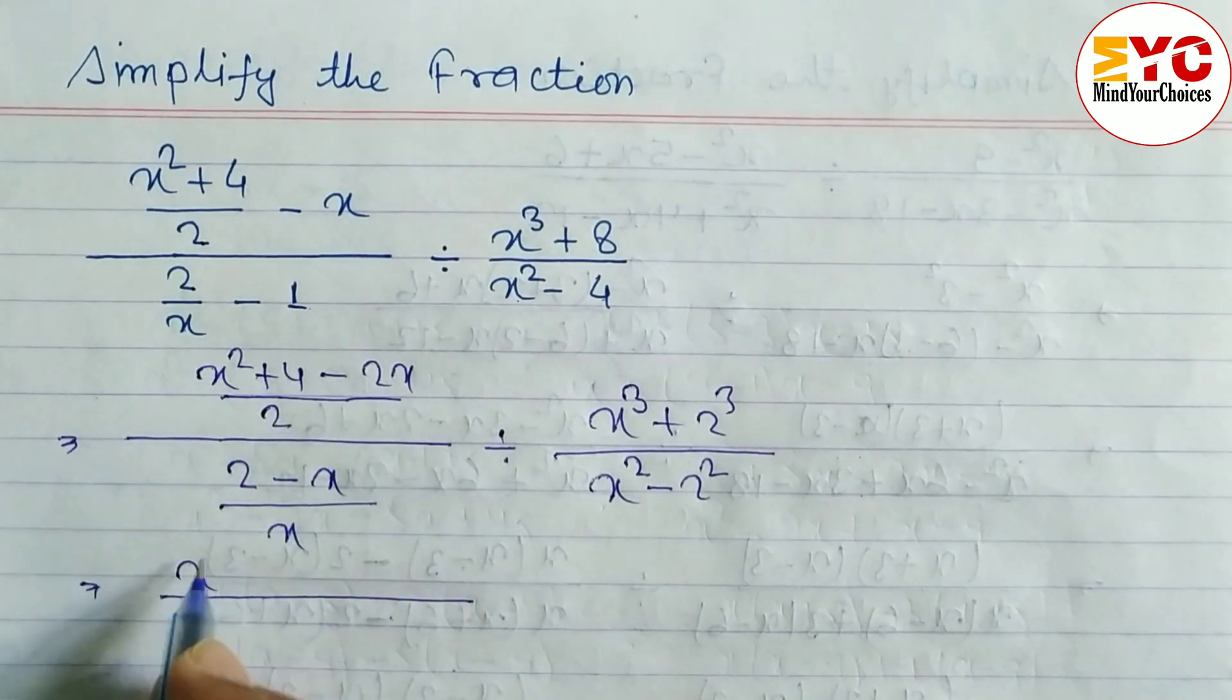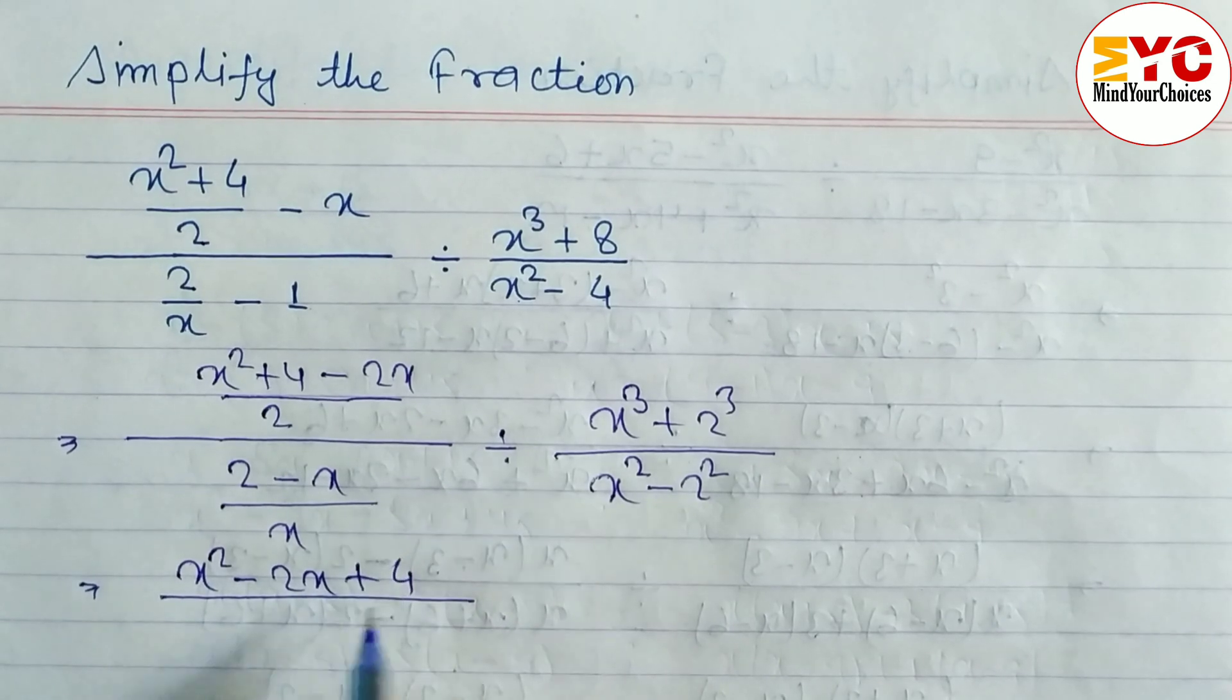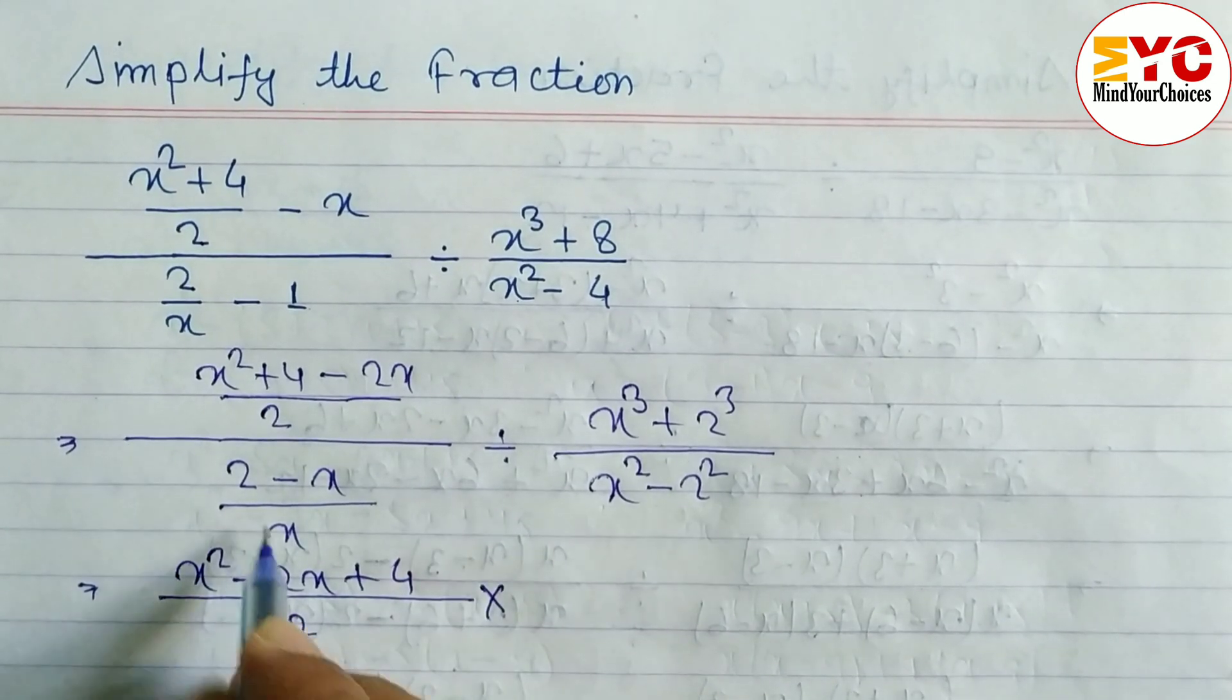We have to arrange this one: x² - 2x + 4 by 2. When you multiply, then this denominator will come at numerator.